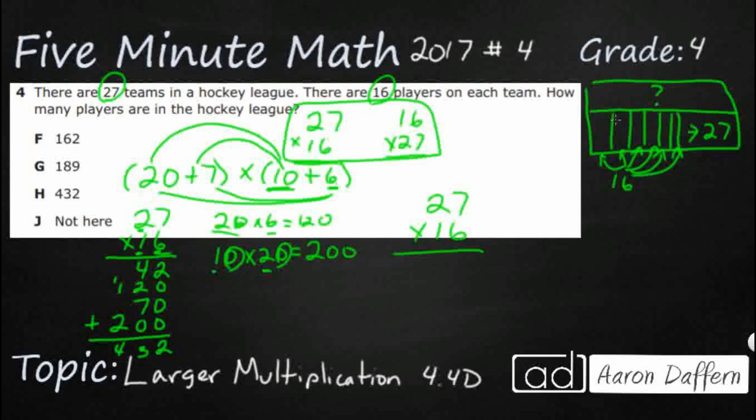So we start with the ones place in the bottom number. And we just multiply up. So 7 times 6 right there. That's going to be 42. But we only put the ones place there. The tens place, the 40. So there's my 42. 4 plus 2.